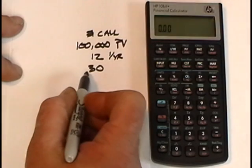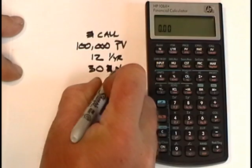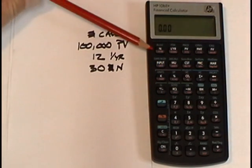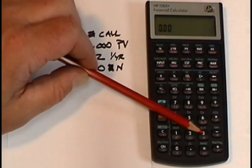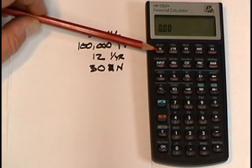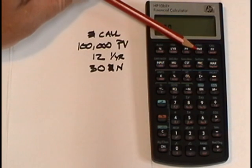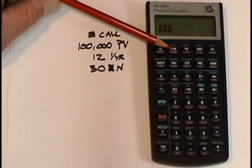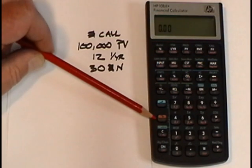this next part is very important on the HP 10b2. Whenever I enter the term, which is the N value, I always press the GOLD KEY first. And here's why. If you take a look at the bottom of the N button, it says times P-YR. So by pressing, for example, 30 GOLD KEY N, what it's doing is it's taking 30 and multiplying it times the 12 that's stored in the payment register. The interest per year conversion will be done automatically. So if that doesn't quite make sense right now, don't worry about it. Here's all you have to remember. Whenever you press this button, always press this one first.